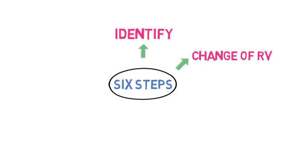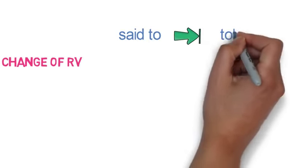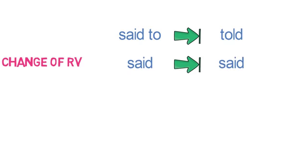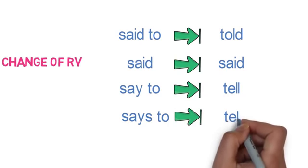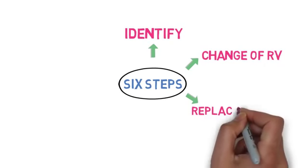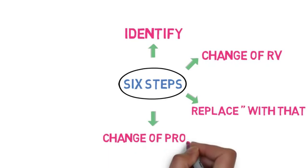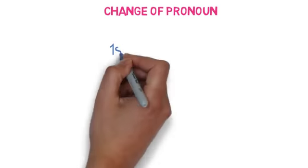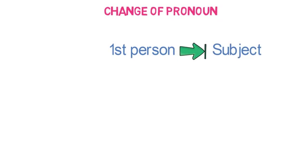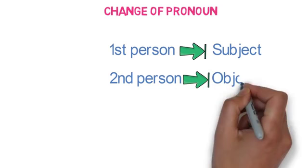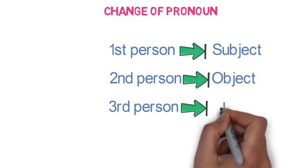The reporting verb will change in the following way: 'say to' will be converted to 'told'; 'said' will remain 'said'; 'say to' will be converted to 'tell'; and 'says to' will be converted to 'tells'. The third step is to replace the inverted comma with 'that' — we will remove the comma and inverted commas and join the reported speech with 'that'. The fourth step is the change of pronoun. Pronouns identified in the first step will be changed as follows: first person will be decided as per subject, second person as per object, and third person will remain unchanged.